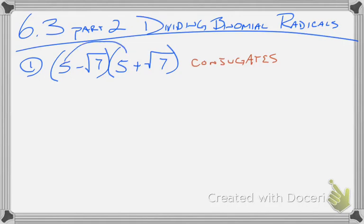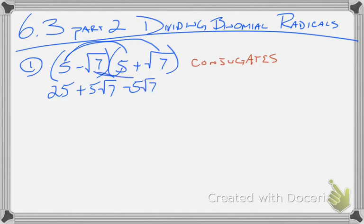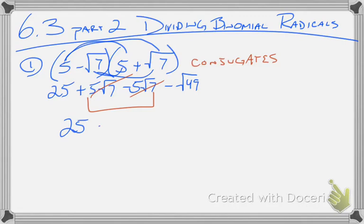So we have 5 times 5 is 25, 5 times the square root of 7, negative square root of 7 times 5 becomes negative 5 square root of 7, and negative square root of 7 times positive square root of 7 becomes negative square root of 49. When you combine the two middle terms, they're going to cancel out — and that's what happens every time you multiply conjugates.